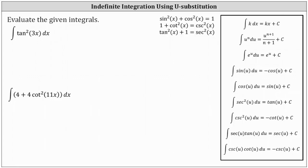For the first example, we have the integral of tan squared 3x dx. If we take a look at the integration formulas on the right, notice how we don't have an integration formula for tangent squared u, which means we'll have to change the form of the integrand function before we determine the antiderivative.